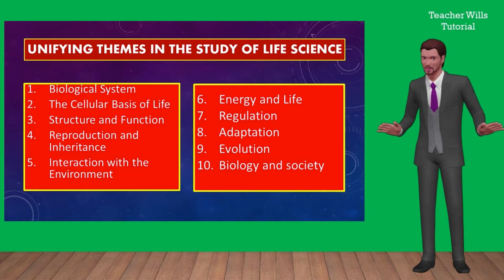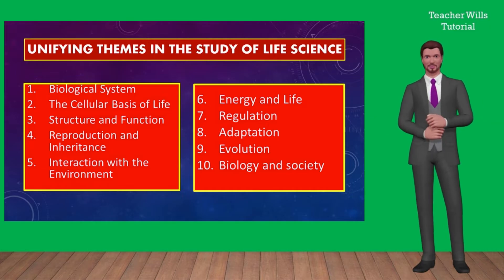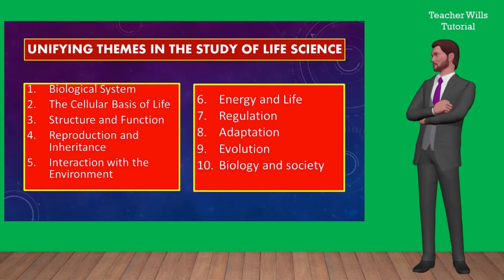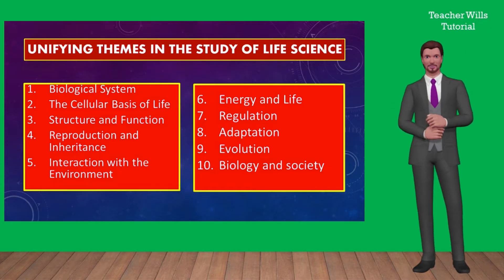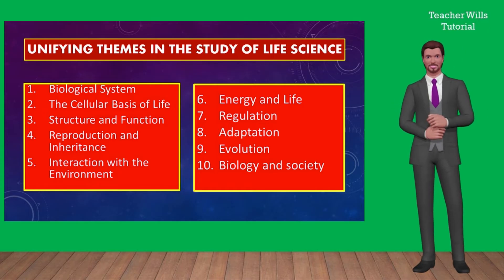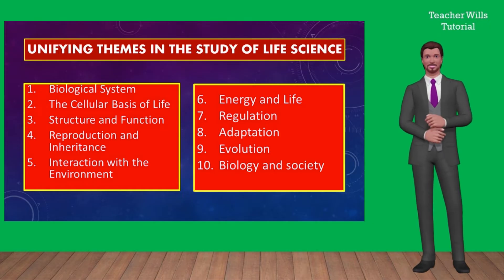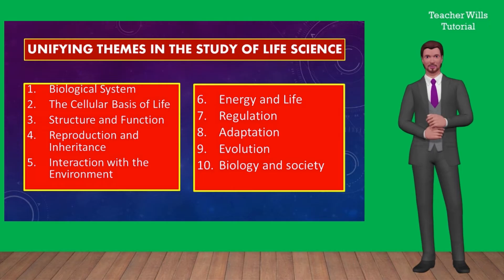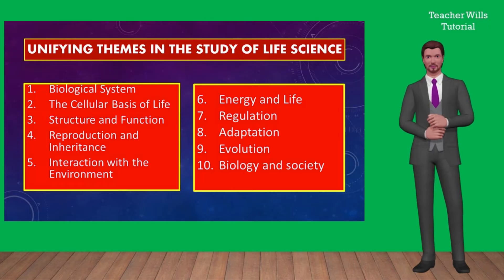The ten unifying themes are: 1. Biological system. 2. The cellular basis of life. 3. Structure and function. 4. Reproduction and inheritance. 5. Interaction with the environment. 6. Energy and life. 7. Regulation. 8. Adaptation. 9. Evolution. 10. Biology and society. Let us explore all these one by one.